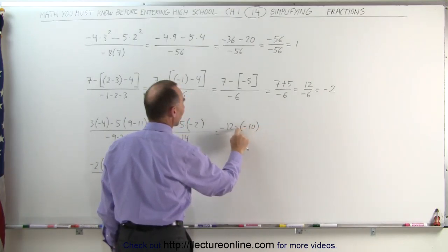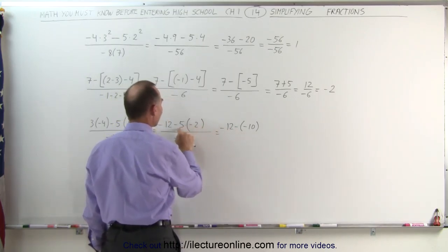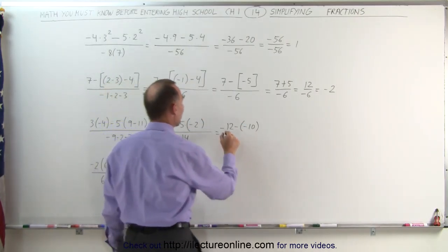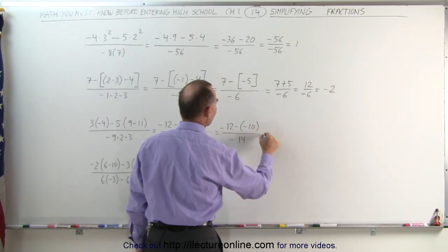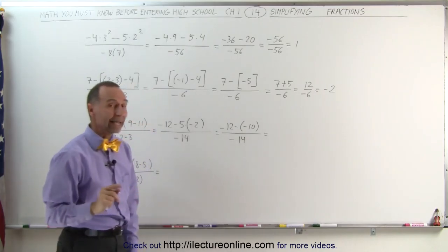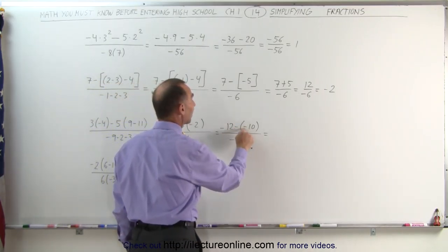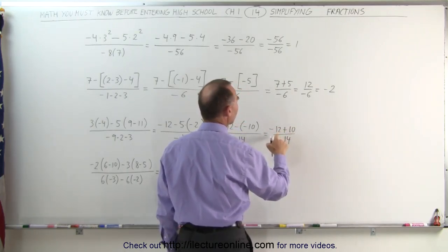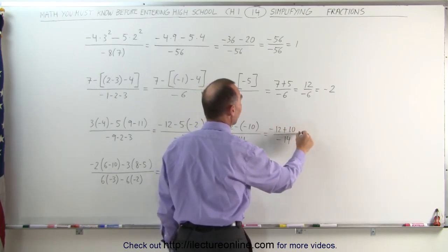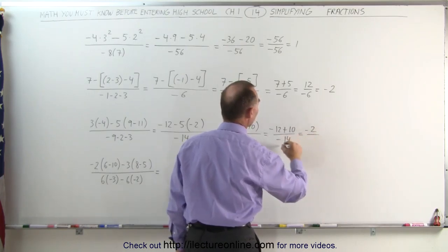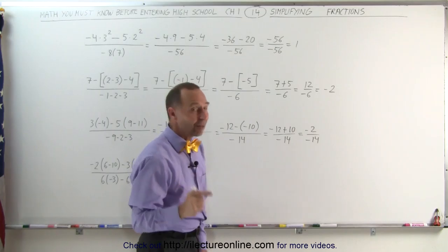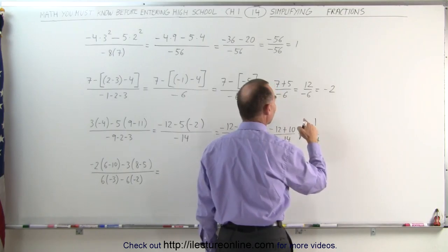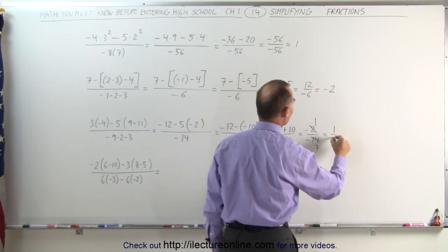Notice I'm shielding this negative sign from this negative sign. 5 times negative 2 is negative 10. I put parentheses there to make sure I understand I'm subtracting a negative number. In the denominator, I still have negative 14 and I still can't simplify because of the subtraction. When you're subtracting a negative number, it's like adding a positive number. This becomes negative 12 plus 10 over negative 14. Negative 12 plus 10 is negative 2, divided by negative 14. Now I can simplify: 2 divided by 2 is 1, 14 divided by 2 is 7. Dividing a negative by a negative gives a positive — this becomes positive 1/7.